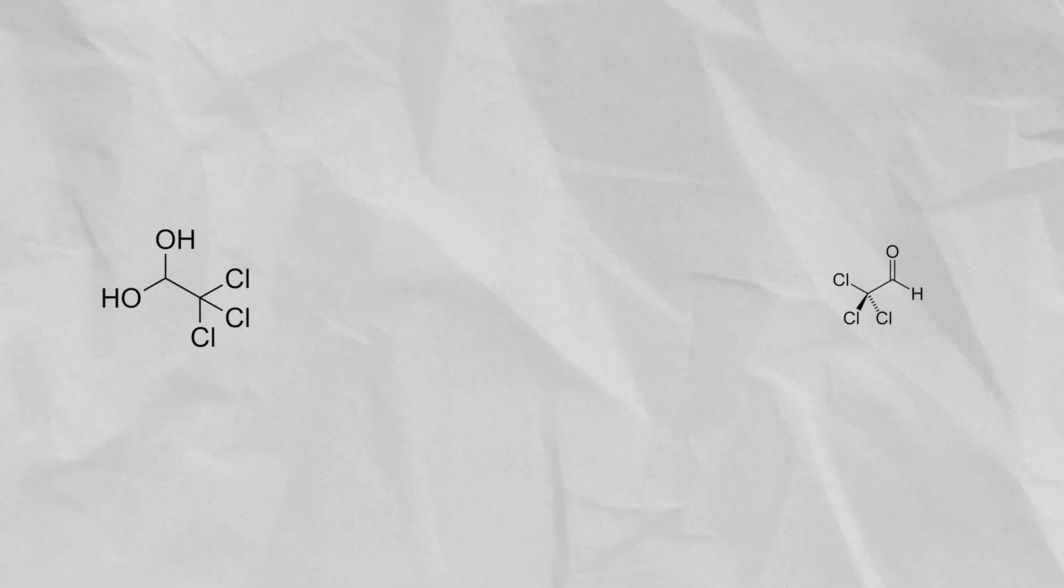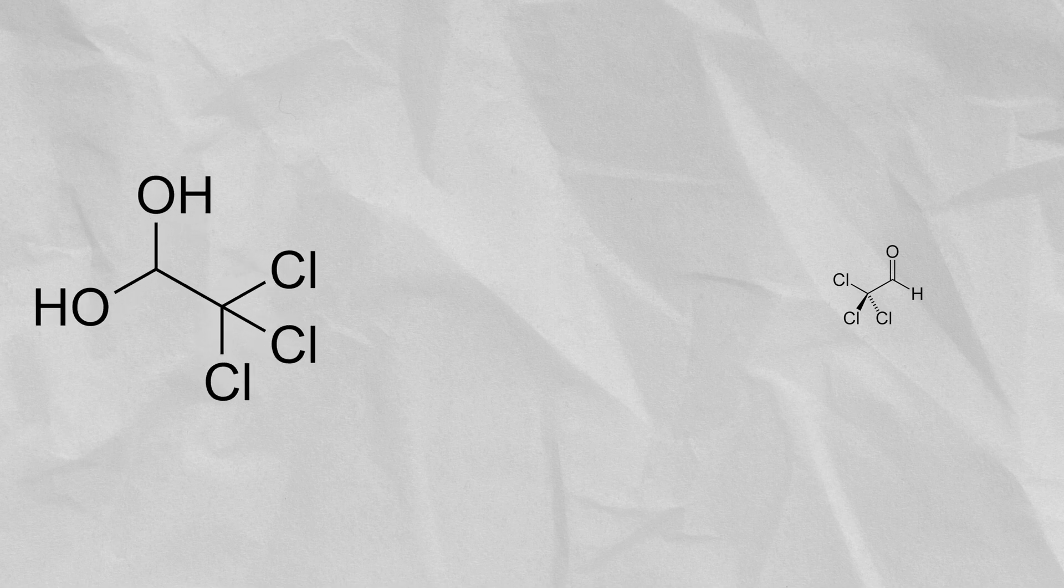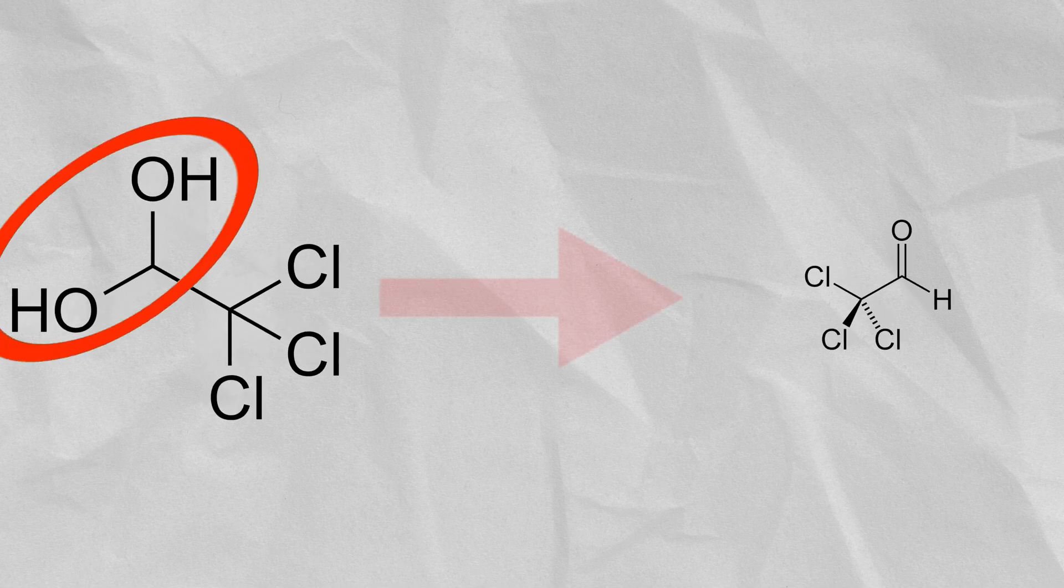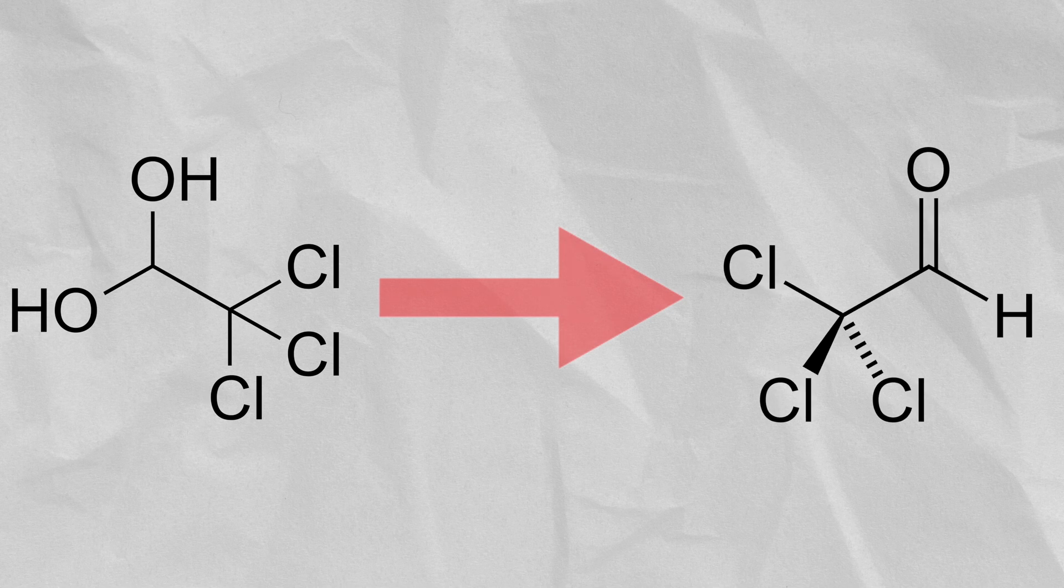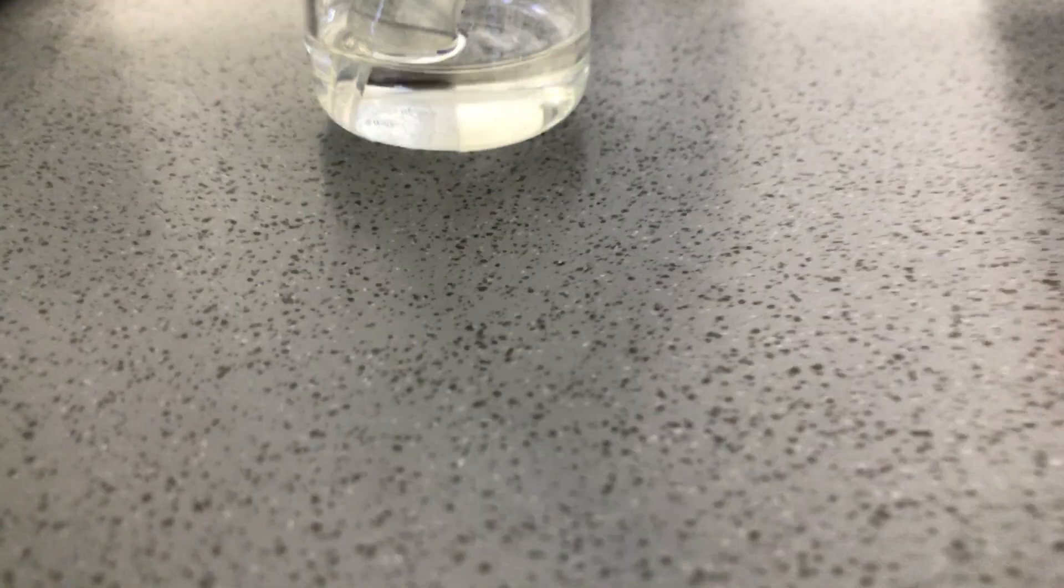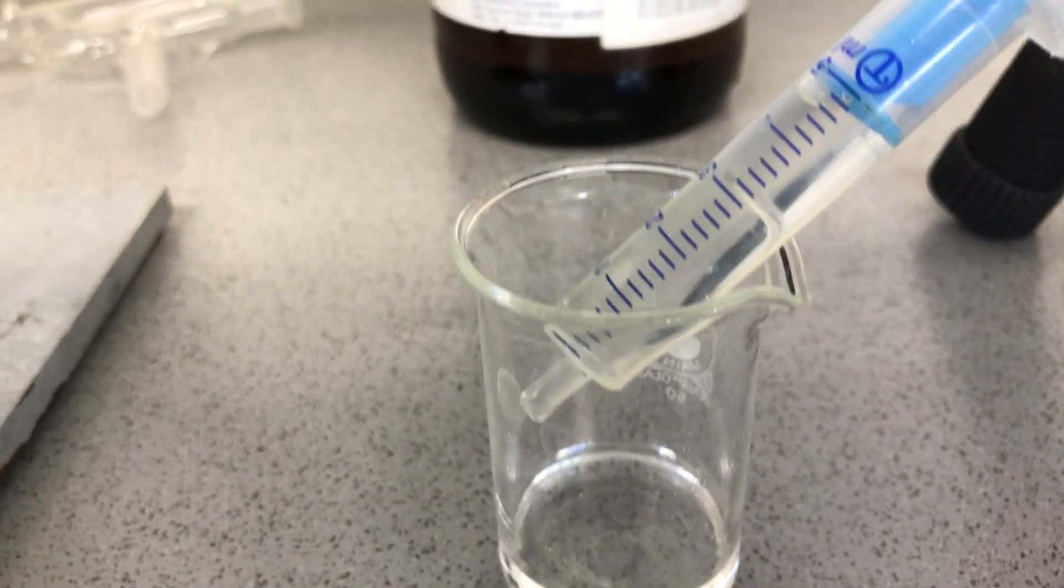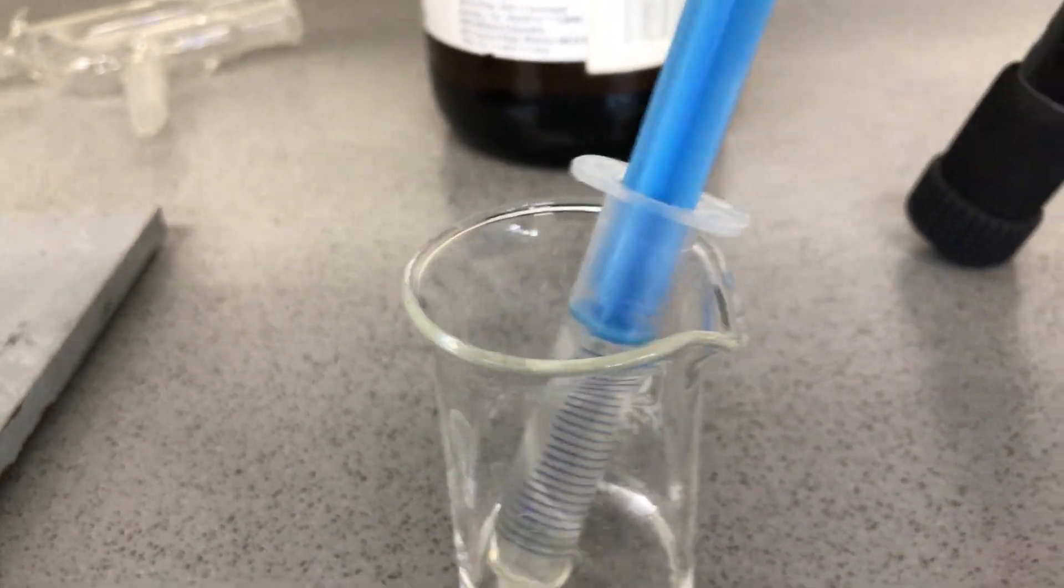Why do we need sulfuric acid? Well, on the left you can see chloral hydrate. See those two hydroxy groups? We need to remove them. With the help of sulfuric acid, we rip off one water molecule and end up with chloral. So 5 mL of sulfuric acid were measured out using a syringe.